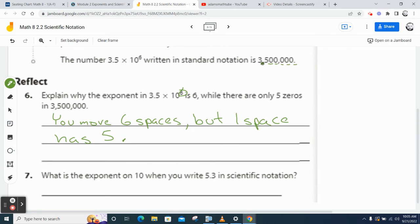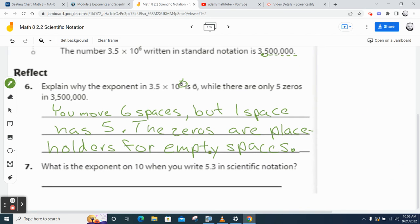I would say that you move six spaces for sure, but one space has five. In other words, to get from, if we start here, I got to go one space past the five, and then I would say the zeros are placeholders for, your textbook says placeholders, but I'm going to say placeholders for empty spaces, which is not mathematically formal, but I think it makes more sense to you guys. You're not college level mathematicians yet.